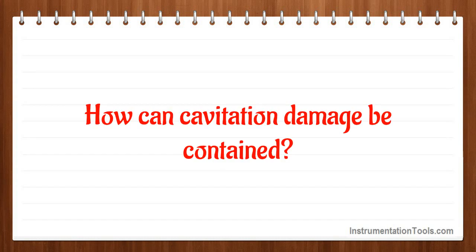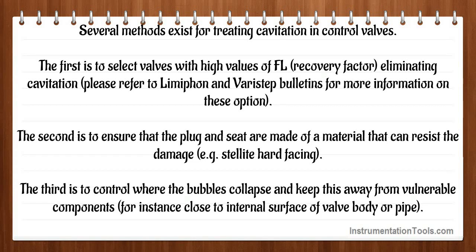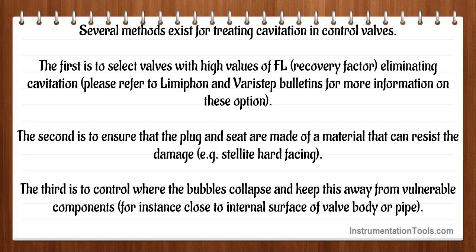How can cavitation damage be contained? Several methods exist for treating cavitation in control valves. The first is to select valves with high values of the pressure recovery factor, eliminating cavitation. The second is to ensure that the plug and seat are made of a material that can resist the damage, e.g., stellite hard facing. The third is to control where the bubbles collapse and keep this away from vulnerable components, for instance close to internal surfaces of the valve body or pipe.